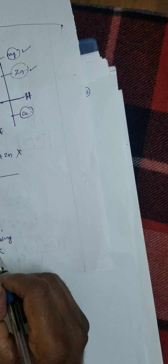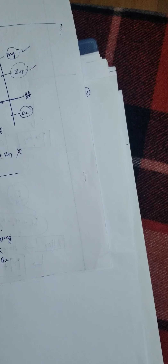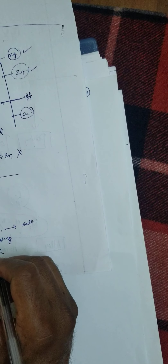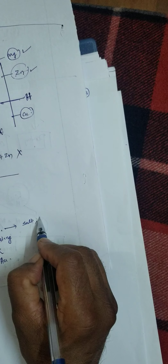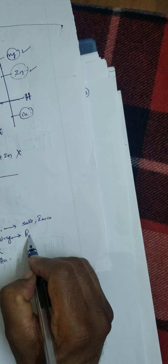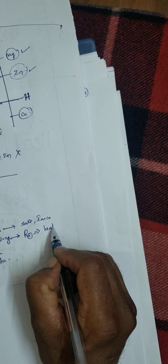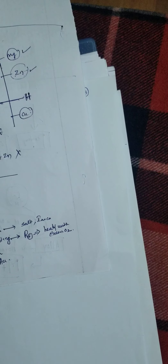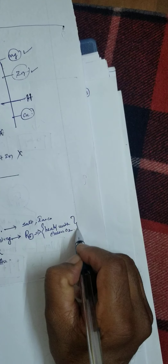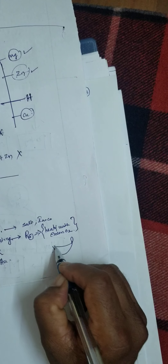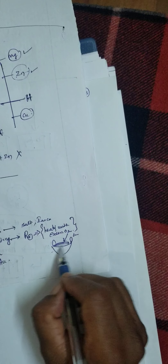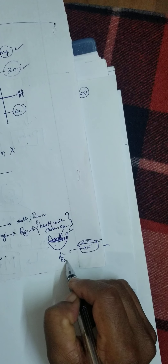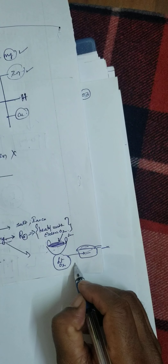Roasting is heating with excess oxygen. If you heat with a limited supply of oxygen, that is not roasting — that is calcination. Roasting means heating with excess oxygen.